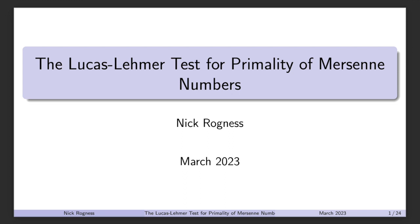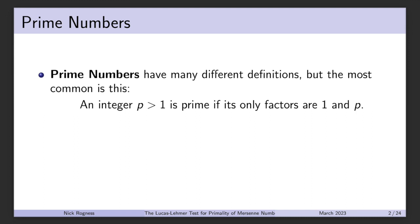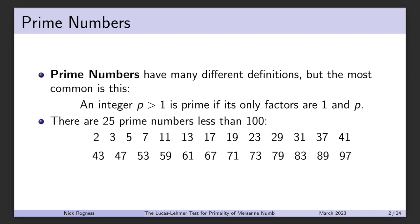First, we have to talk about prime numbers. Prime numbers are defined in many different ways, but the most common definition is any integer p greater than 1. We call that prime if its only factors are 1 and p. There are 25 prime numbers less than 100, listed here.